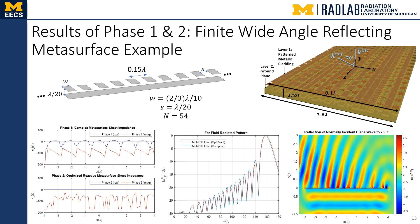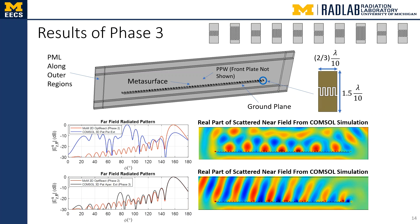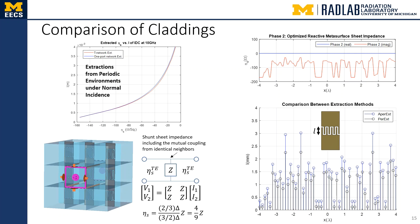Now we need to replace each of these homogenized elements with printed circuit parts using our aperiodic extraction approach. Here we show the results of phase three. We have already completed the aperiodic extraction, and we're going to do full-wave simulation on the patterned metallic cladding of the aperiodically extracted metasurface. I'm going to compare it to the simulation of the cladding obtained using the traditional local periodicity approach. Shown in the middle of the slide are the results for the local periodicity approximation — we see that we do not get the scattered near field correct or the far field correct. By using the aperiodic extraction approach, we do get the correct far field and near field, shown in the lower portion of the slide. These results are obtained from full-wave simulation in COMSOL of the actual patterned metallic cladding.